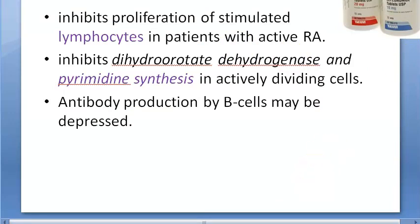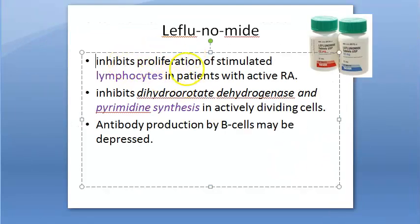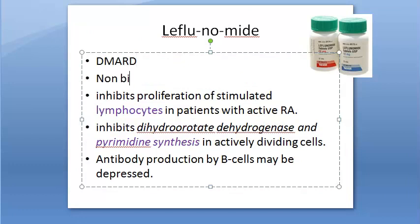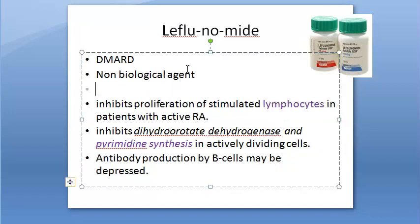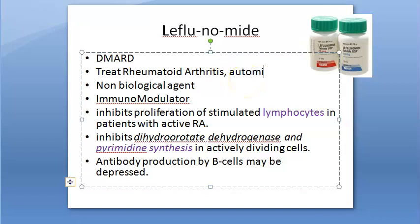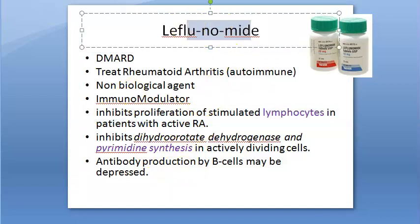So what exactly should we know about leflunomide? It is a disease-modifying anti-rheumatoid drug, a non-biological agent, and an immunomodulator. It is used to treat rheumatoid arthritis, which is an autoimmune disease.